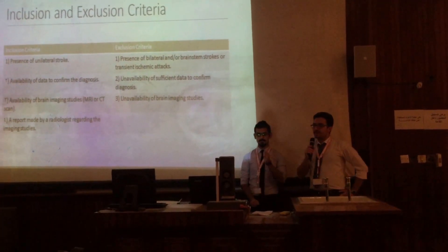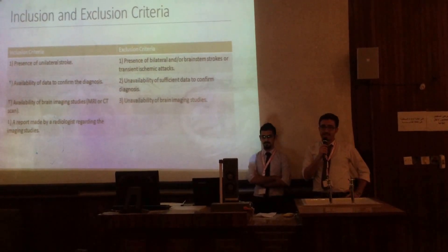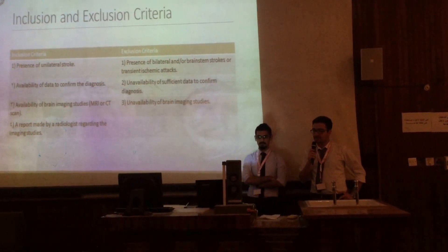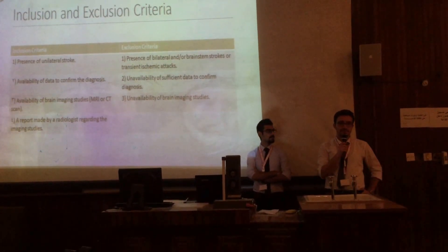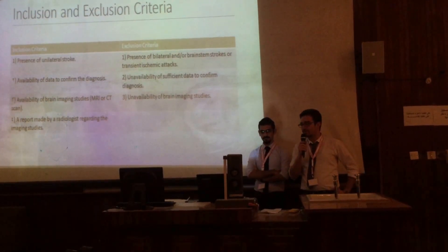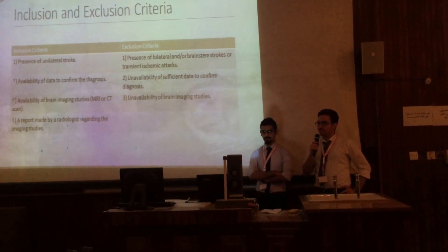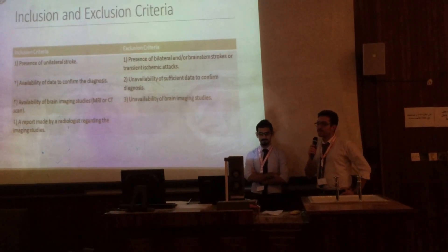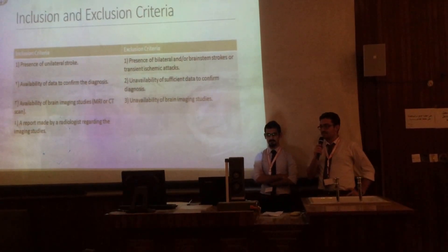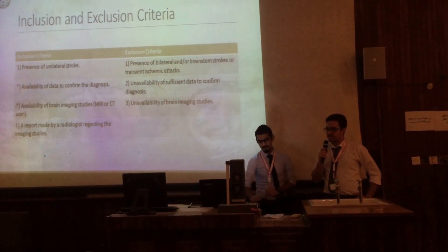The inclusion criteria were presence of unilateral stroke, availability of data to confirm the diagnosis, availability of brain imaging studies, and availability of radiologist reports on those imaging studies. Exclusion criteria were bilateral stroke, brainstem stroke, transient ischemic attacks, unavailability of sufficient data to confirm the diagnosis, and unavailability of brain imaging studies.